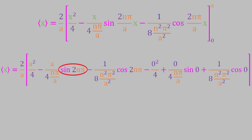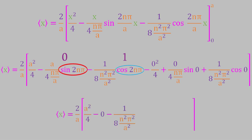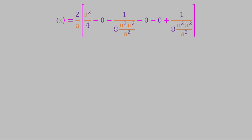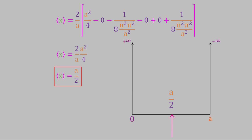Looking at each of these terms: the sine of 2n pi is always equal to 0 if n is an integer, and the cosine of 2n pi is always equal to 1. That gives us the first three terms. Meanwhile, the sine of 0 is 0 and the cosine of 0 is 1, giving us the last three terms. So the expression in the square brackets is just equal to a squared over 4, and that means the expectation value of x is a over 2—the center of the box. That makes sense: since the system can move freely inside the box, on average it would be located in the middle, and our calculations give us perfectly sensible results.